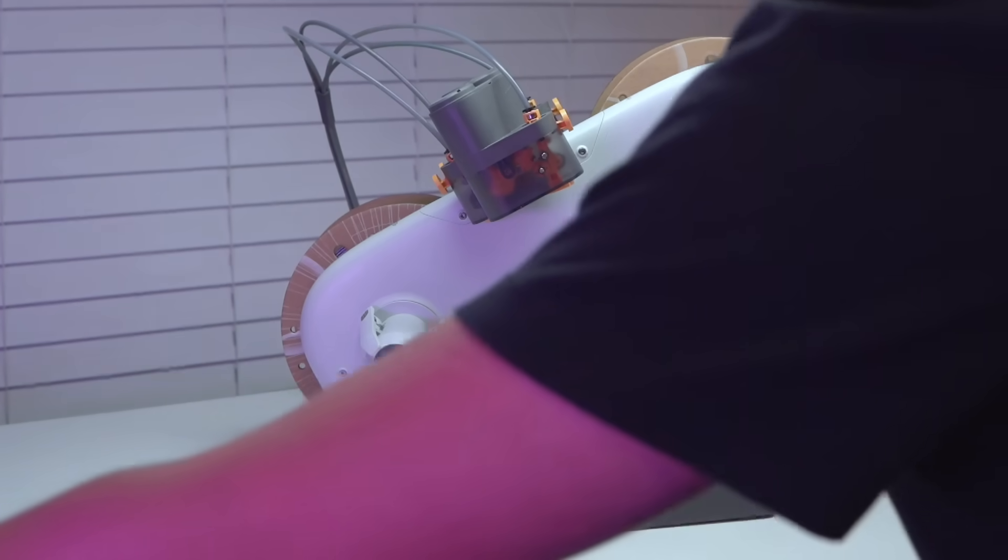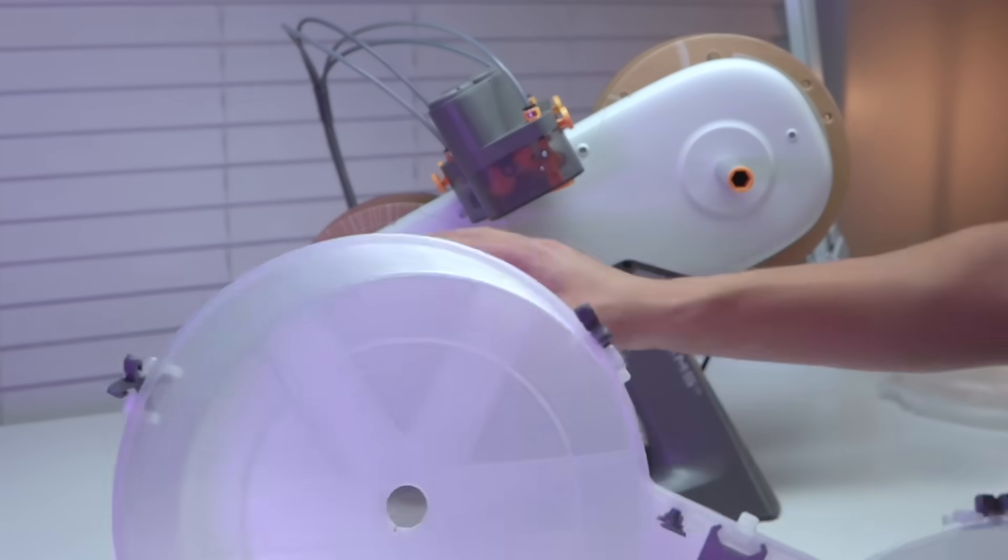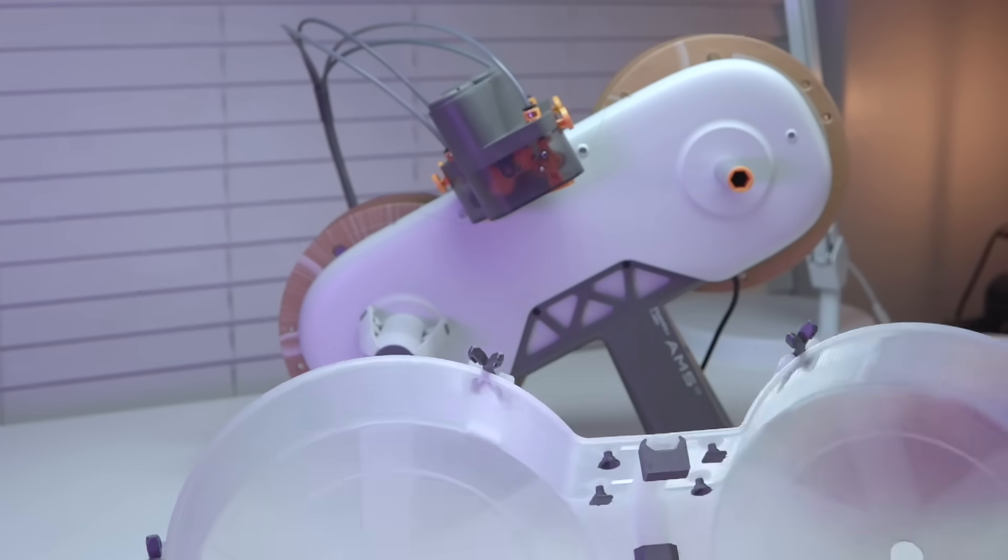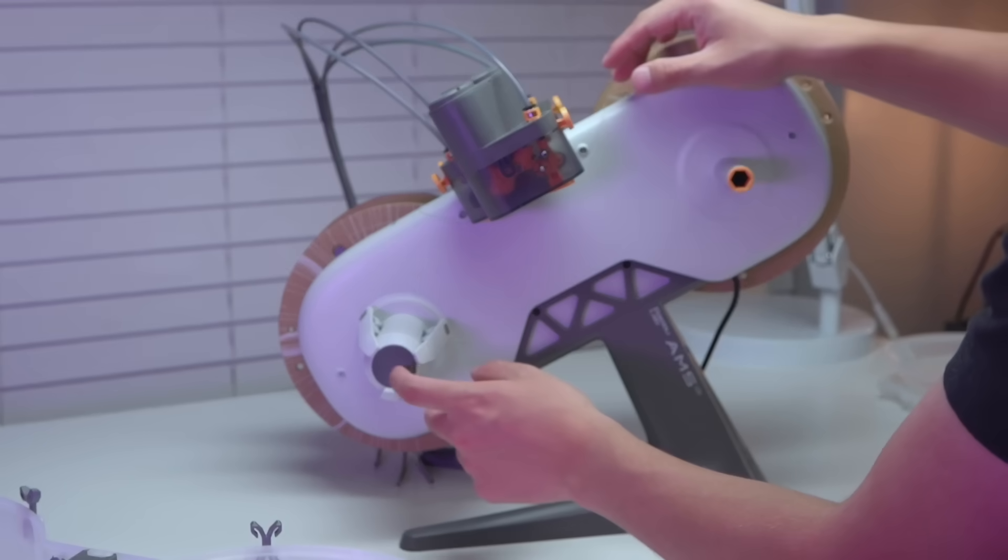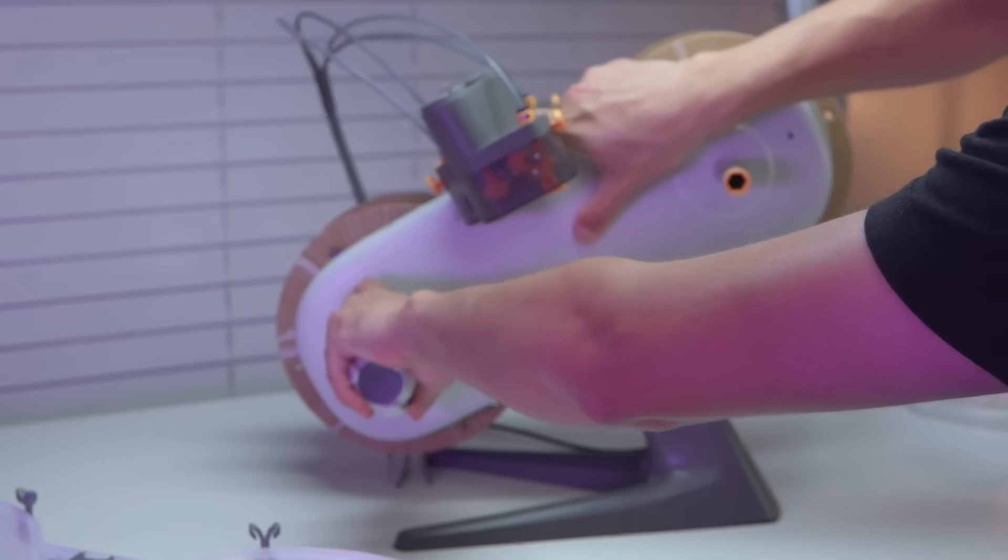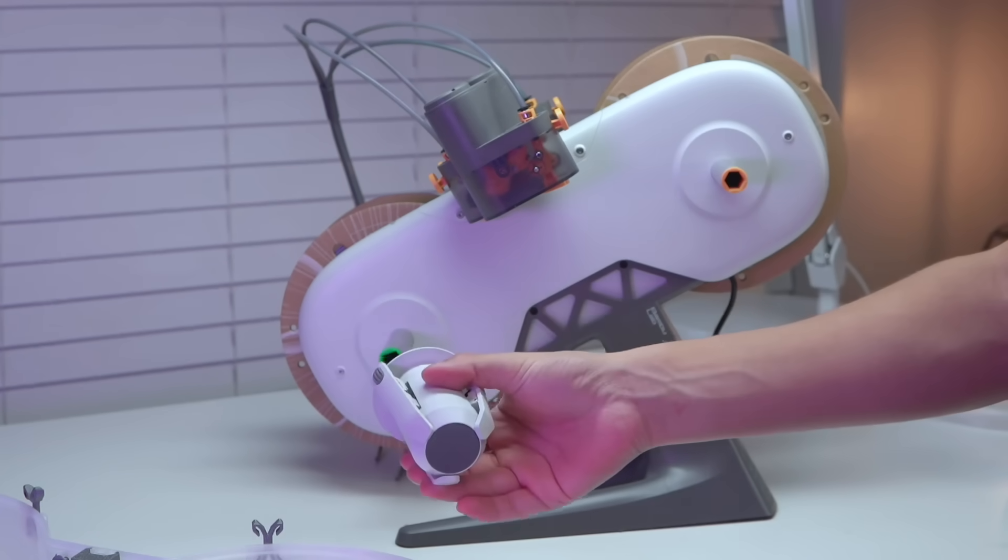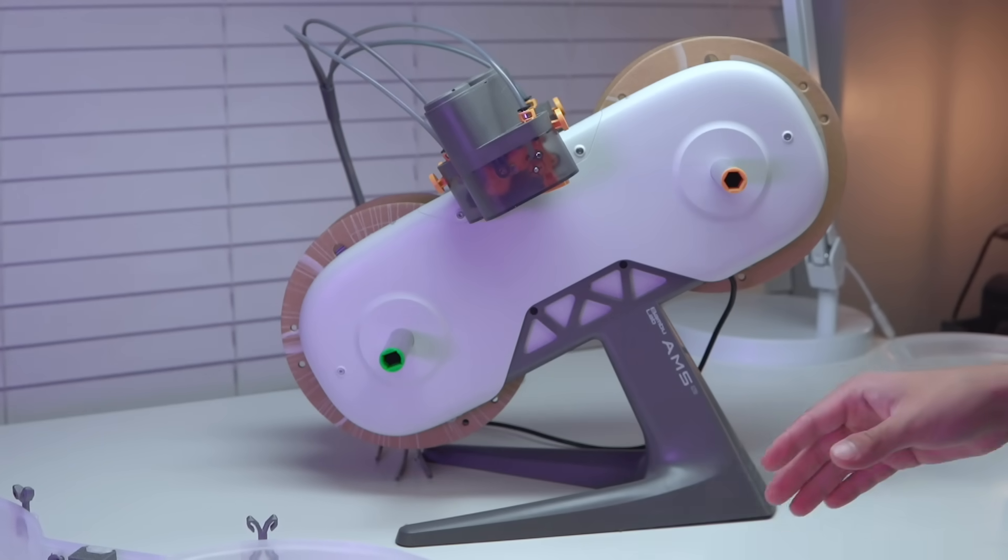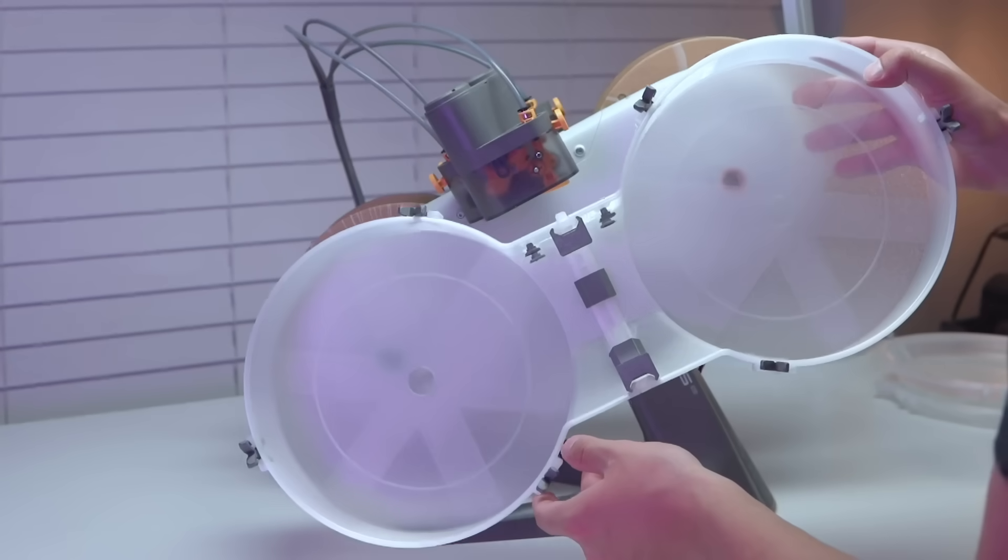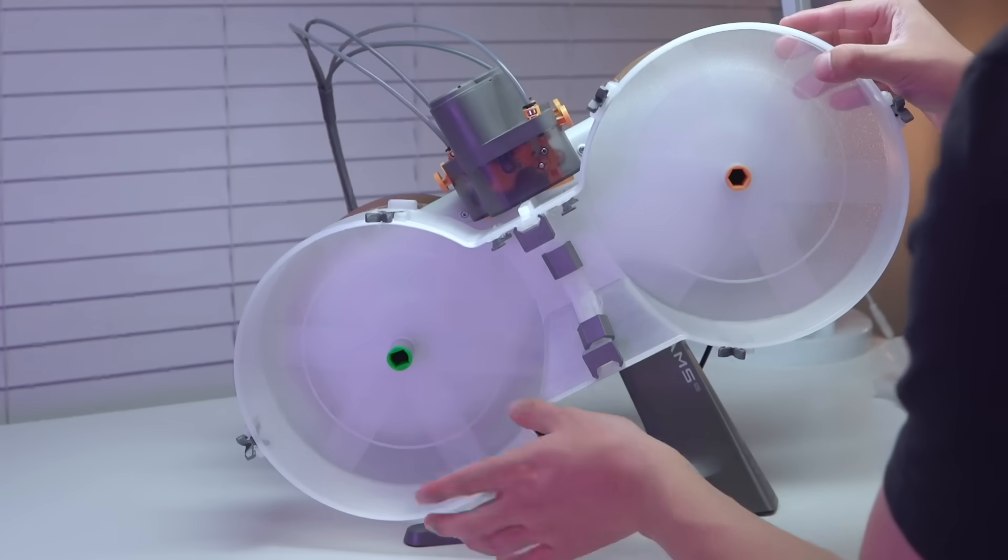So upon further research and me being stupid, you need to take off the rolls of filament as well as the actual, whatever you want to call these things as well. And they just come off with a nice tug like that. Now we can install this thing the correct way.